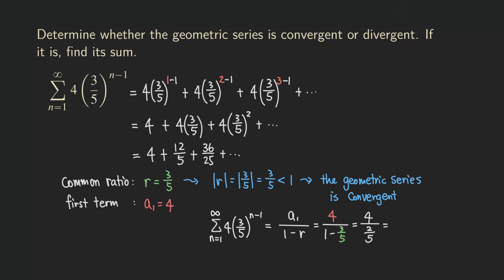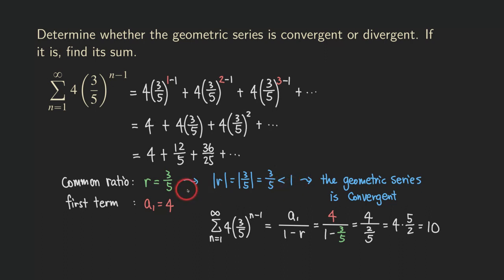Changing the division to multiplication by the reciprocal — two fifths becomes five over two — we get the answer of 10. So the sum is 10 and the series is convergent. In summary, we only need the common ratio and the first term to find the sum. If the absolute value of r is greater than one, the series diverges. If the absolute value of r is less than one, the geometric series converges and the sum is the first term divided by one minus r.